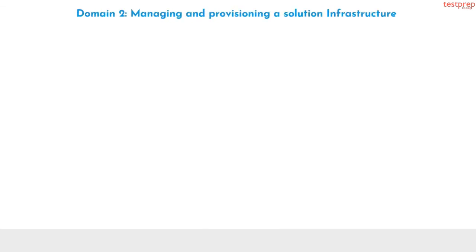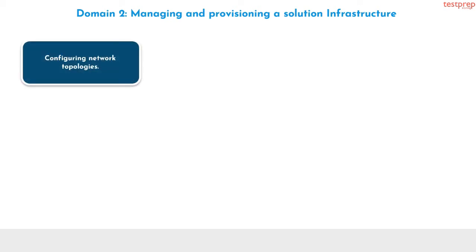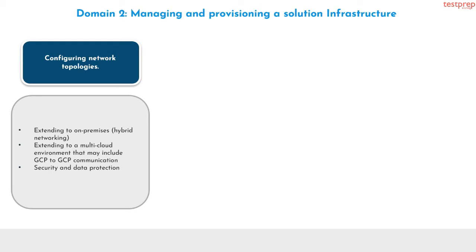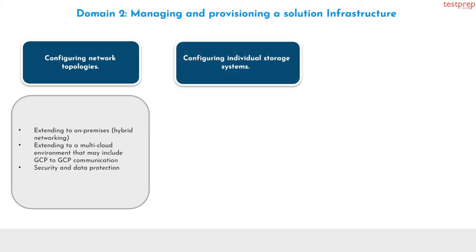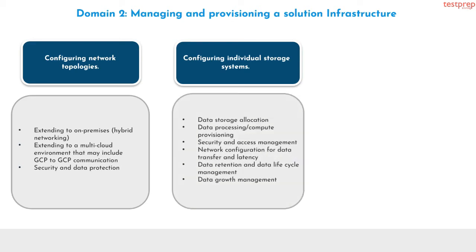Domain 2: managing and provisioning a solution infrastructure. Number 1, configuring network topologies. It contains: first, extending to on-premises hybrid networking; second, extending to a multi-cloud environment that may include GCP to GCP communication; third, security and data protection. Number 2, configuring individual storage systems. It contains: first, data storage allocation; second, data processing or compute provisioning; third, security and access management; fourth, network configuration for data transfer and latency; fifth, data retention and data lifecycle management; sixth, data growth management.